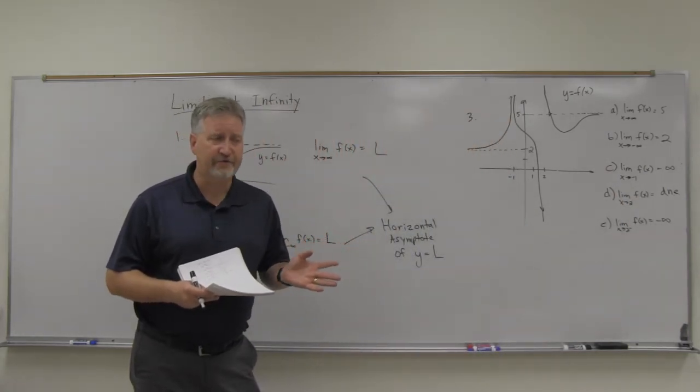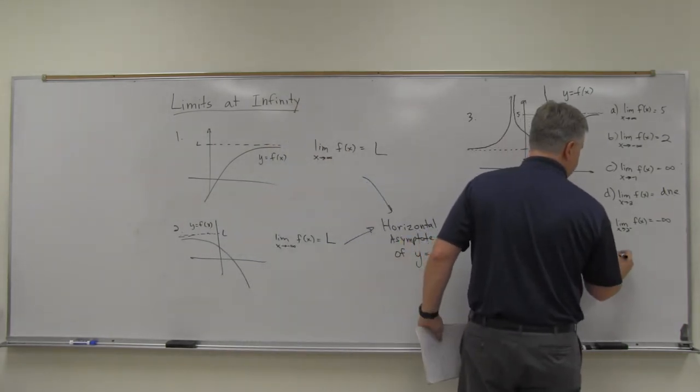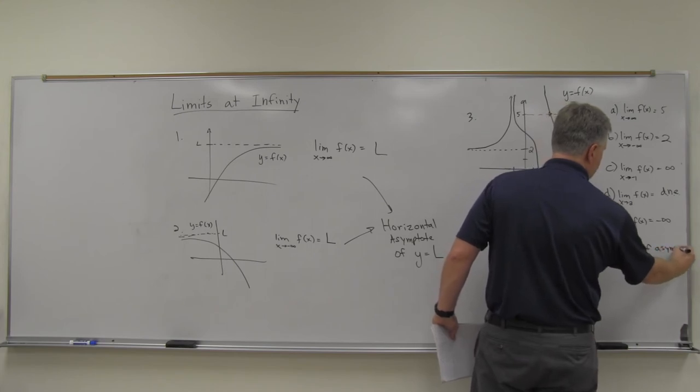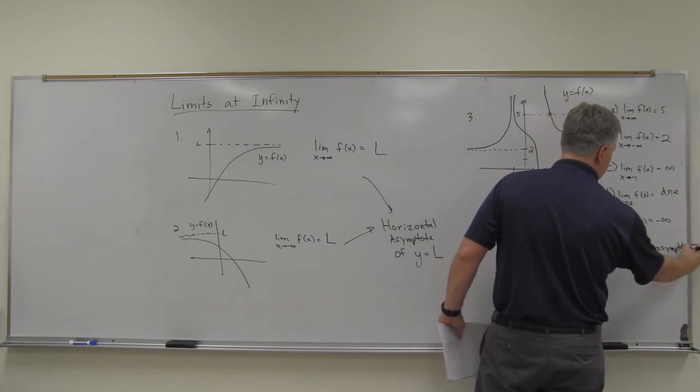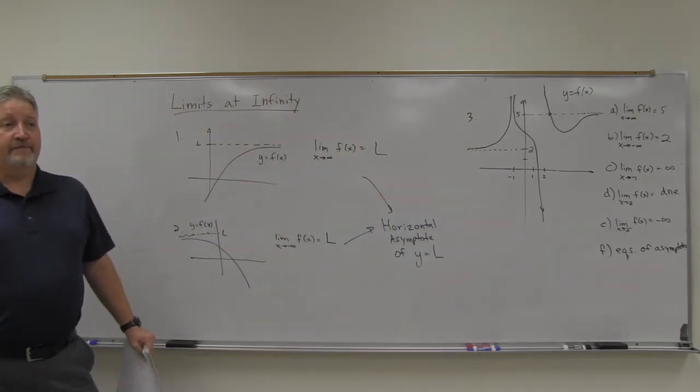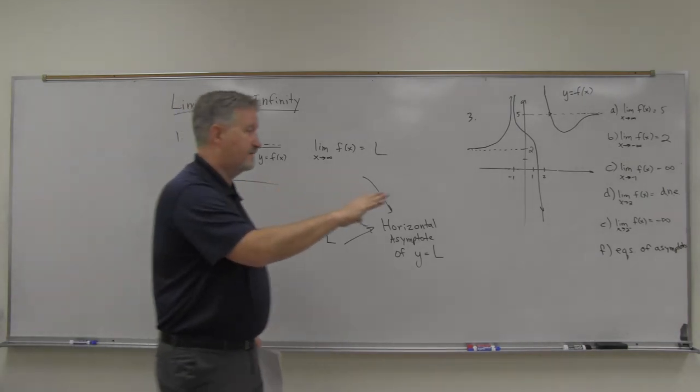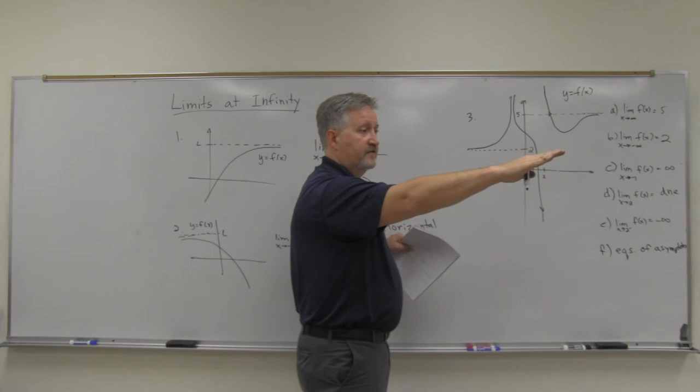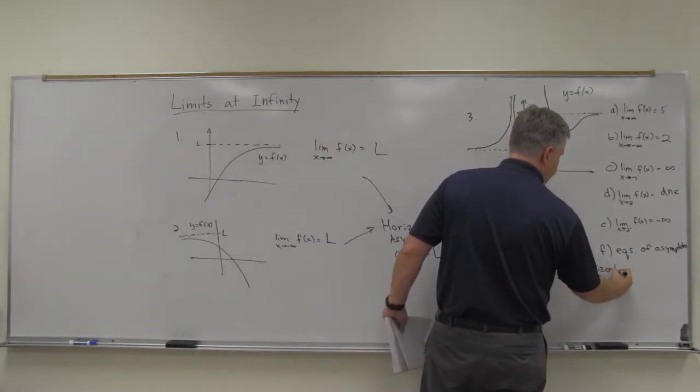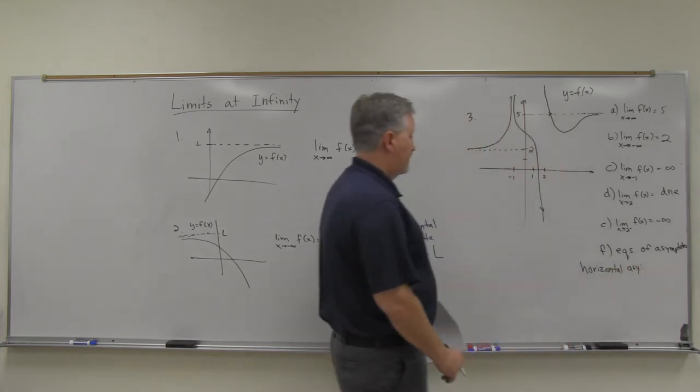The other thing they'll ask on these is also then, what are the equations of the asymptotes? Equations of the asymptotes. Well, we just mentioned here the horizontal asymptotes. That's where it levels off on either the left or right. So the horizontal asymptotes here, there, we've got two of them.